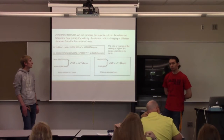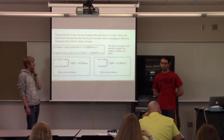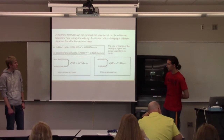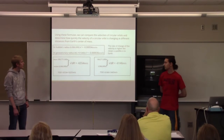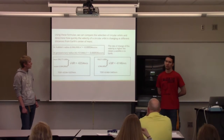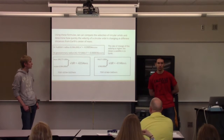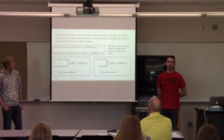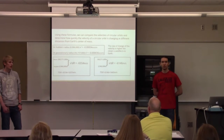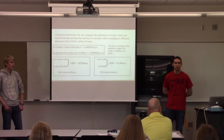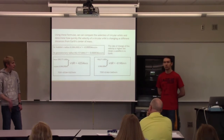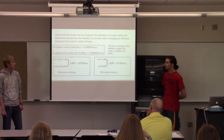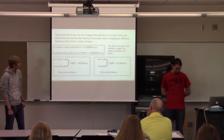At Hubble the velocity is changing at negative 0.00054 meters per second per meter, which is not very much. But compared to geostationary radius, the rate is quite different — negative 0.000036 meters per second per meter. It's kind of weird, because the farther away a satellite gets, the slower its orbit. I thought it would have been higher because it would have to take more of a trip to get around the Earth. That wasn't the case.